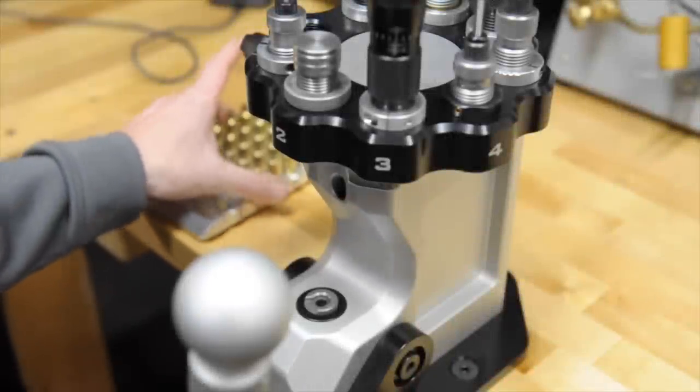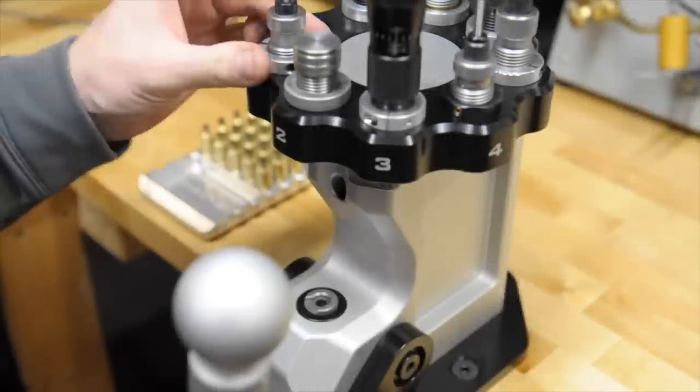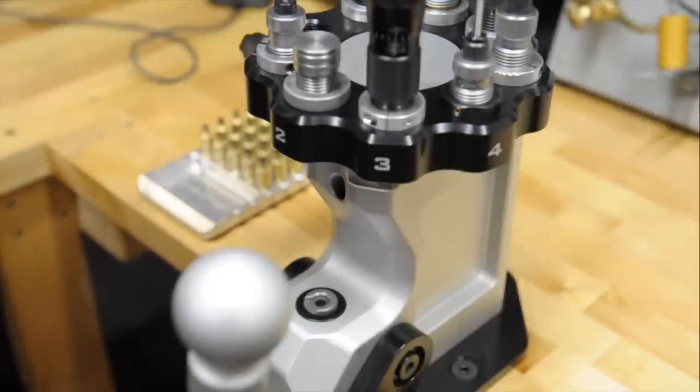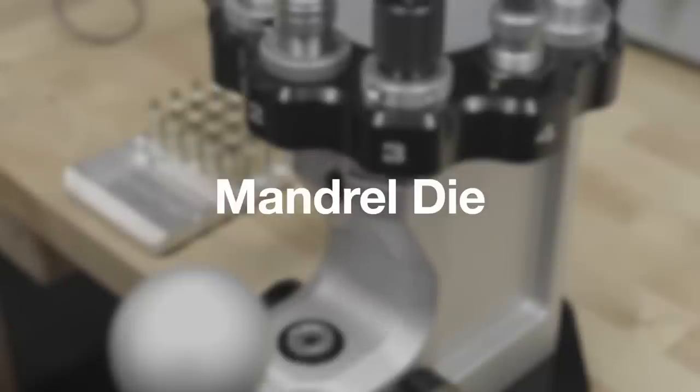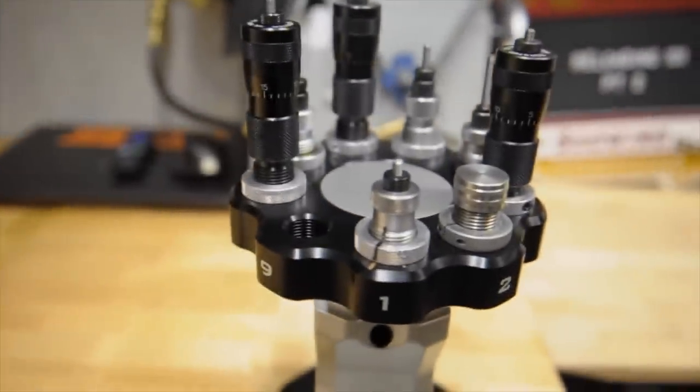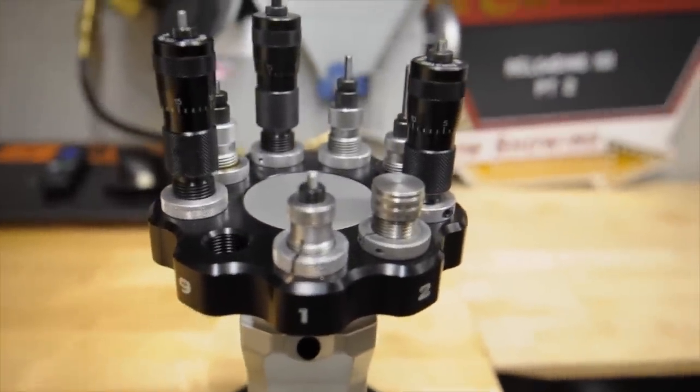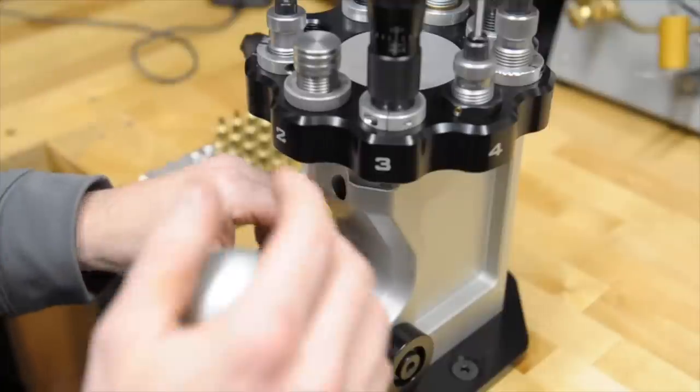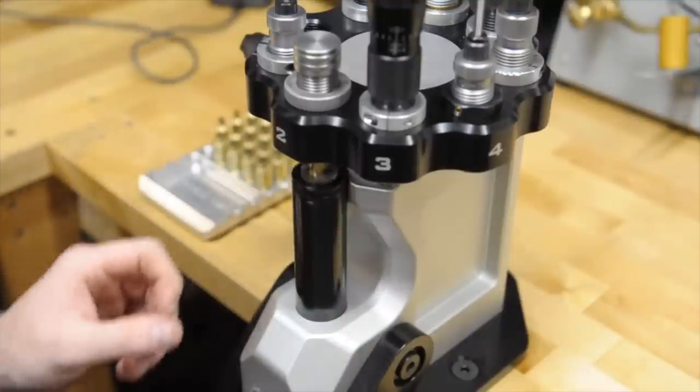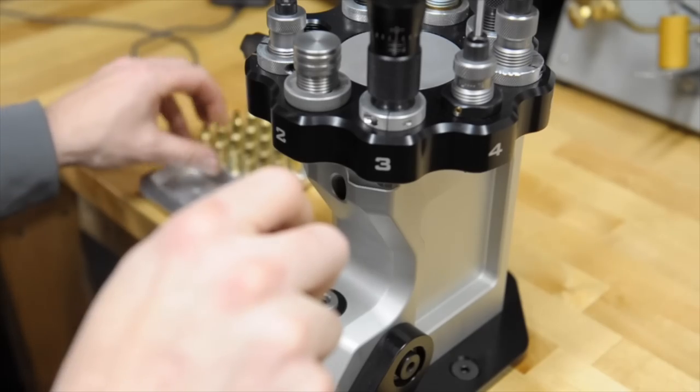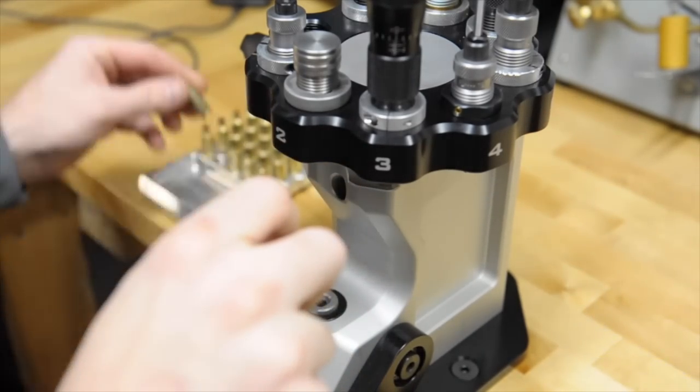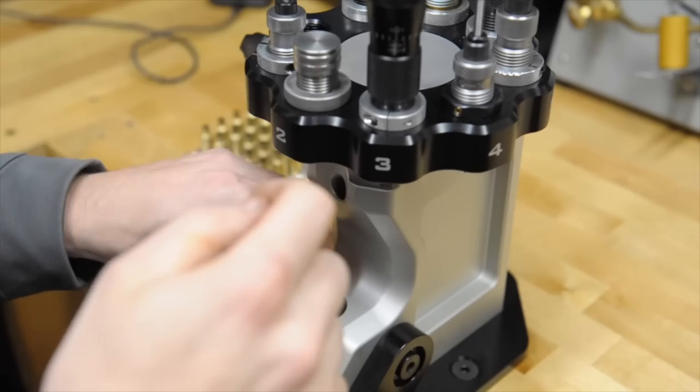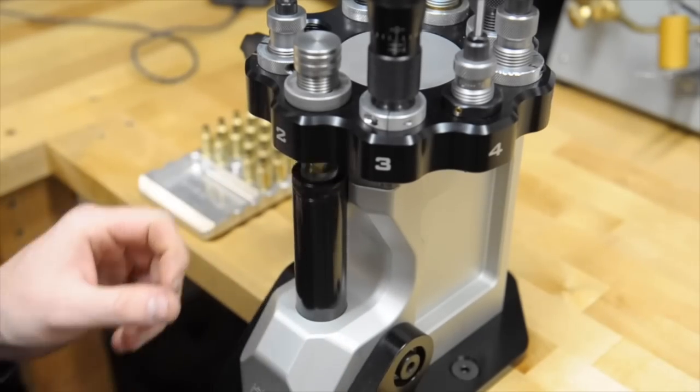Now because I don't have an expander ball in my sizing die like we talked about, I have a mandrel. Before you put a primer in, and I like to do it after trimming so that the case mouth is chamfered, I have to run a mandrel through it.